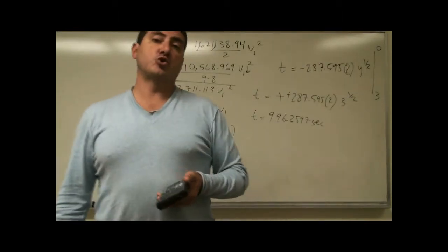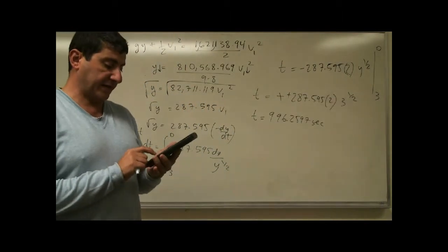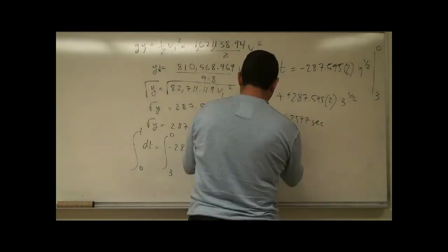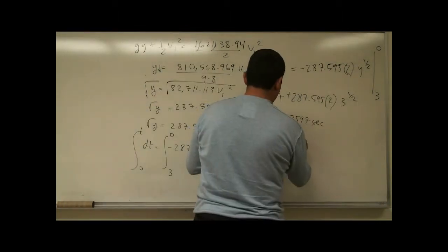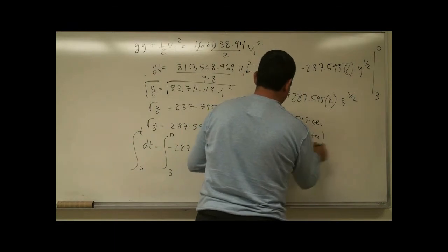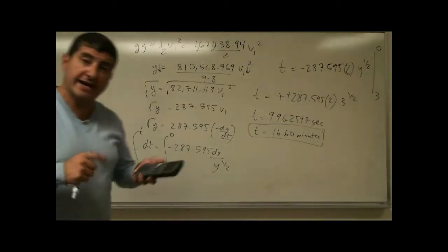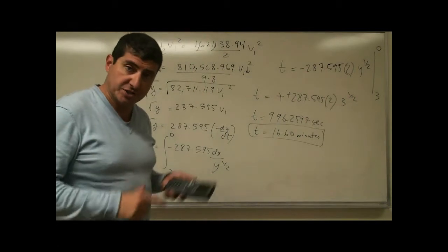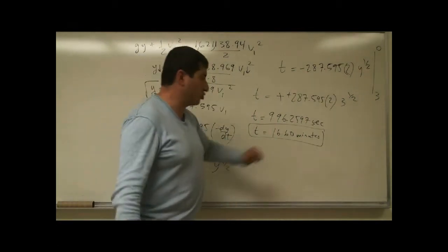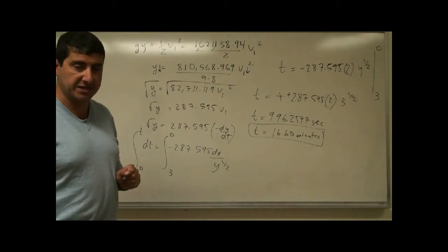Calculating this: 287.595 × 2 × √3 ≈ 996 seconds. Dividing by 60 gives approximately 16.60 minutes. So with a pipe 20 centimeters in diameter, it takes about 16.6 minutes to drain this pool.